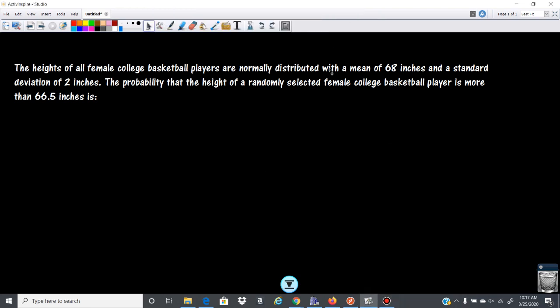Okay, next problem. The heights of all female college basketball players are normally distributed with a mean of 68 inches and a standard deviation of 2 inches. The probability that the height of a randomly selected female college basketball player is more than 66.5 inches is.